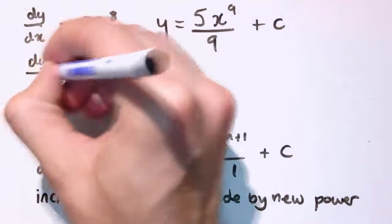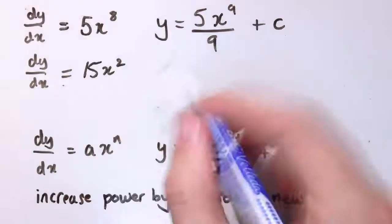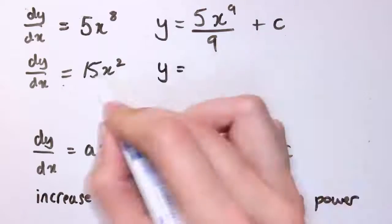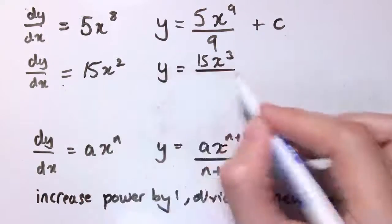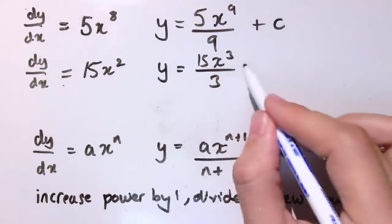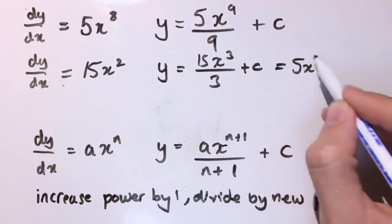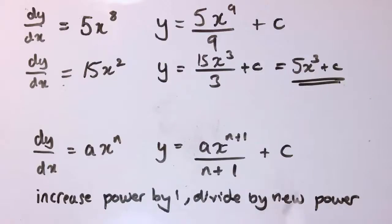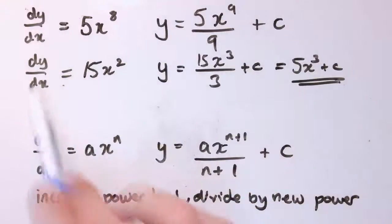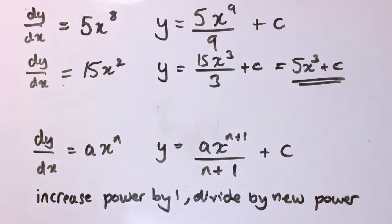What if I had dy/dx = 15x²? Well, I'm going to increase the power by 1 to get x³, and divide by the new power, which is 3. And here, we've also got +c, but here I should notice that 15 divided by 3 is 5, so that just gives me 5x³+c. So, I know that if this is the derivative, the original function belongs to this family of curves. If I had a bit more information, I might also be able to work out what c is. But there we go, that's the basic idea.